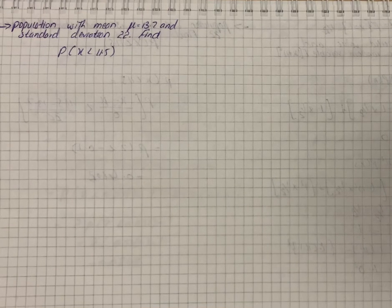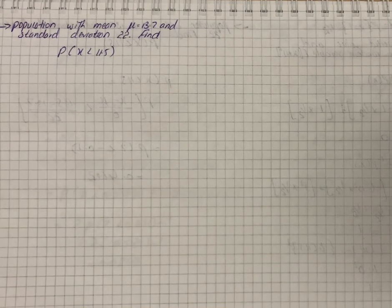From the question we have to find the probability that a single randomly selected value is less than 11.5 in a sample of size n equals 78 is randomly selected with the mean less than 11.5.